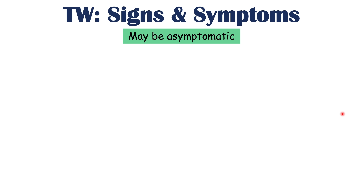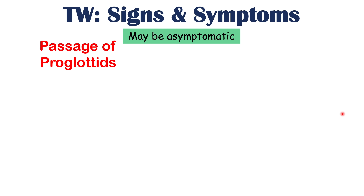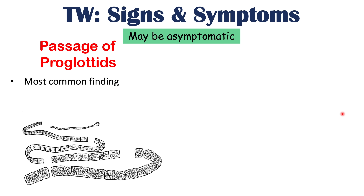If a patient does have signs and symptoms, some of them include passage of proglottids. This is actually one of the more common findings in patients with tapeworms. Proglottids are little pieces of tapeworm passed in the stool of an infected person, often described as something white or a little piece of rice in the stool. This can often be noted in patients with a tapeworm infection and may lead to slight discomfort as well.